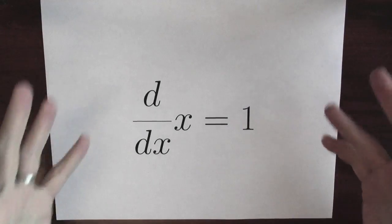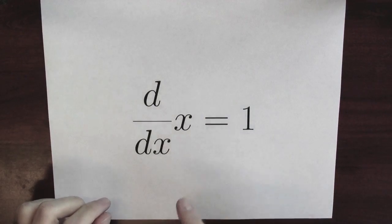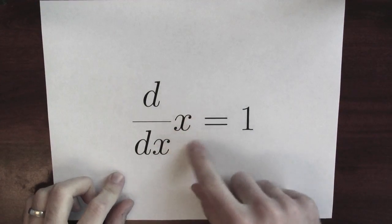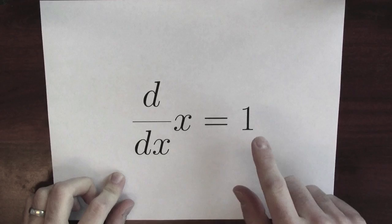Here's the so-called power rule for differentiating x to the n. Nevertheless, here we go. When n equals 1, the derivative of just x to the first power, which is just x, is equal to 1.